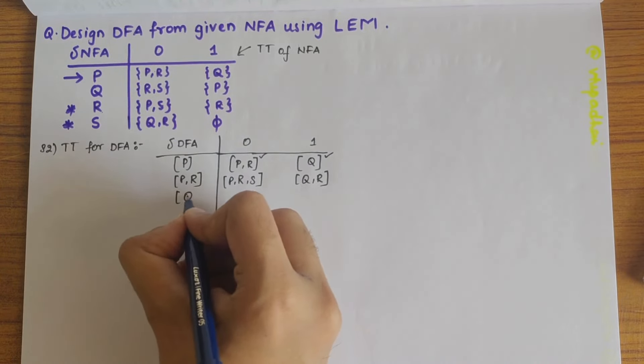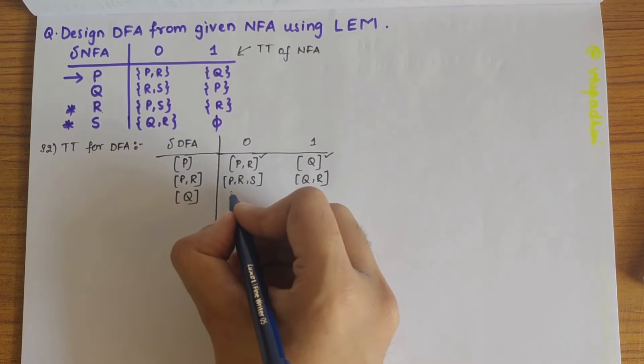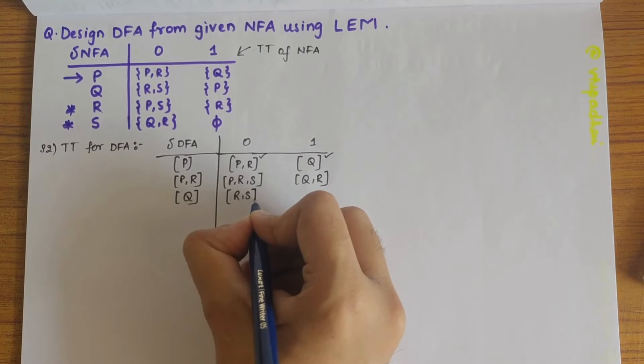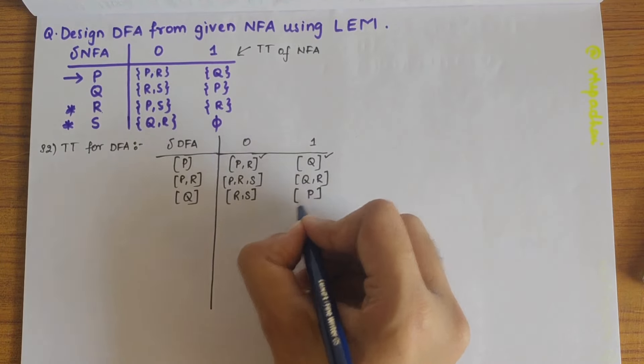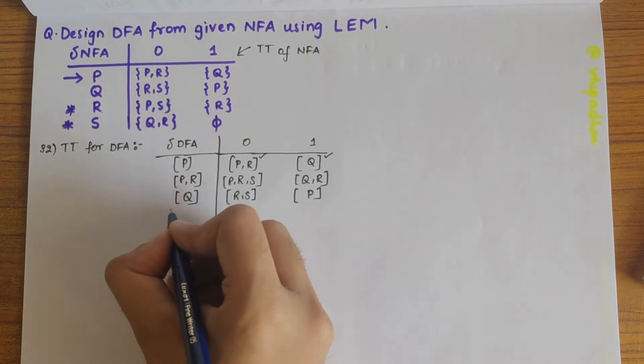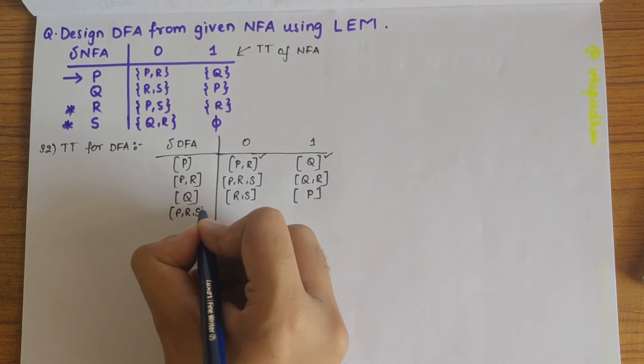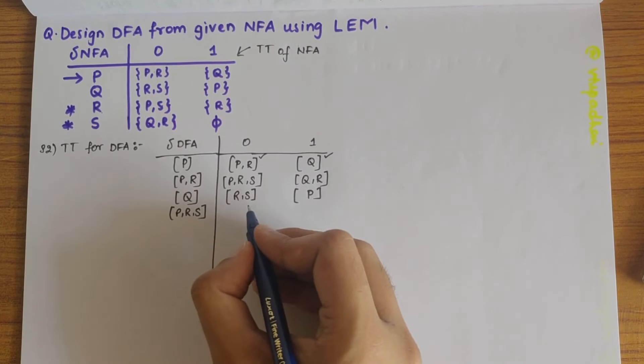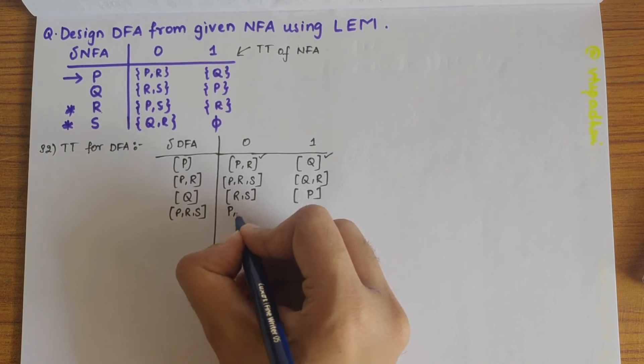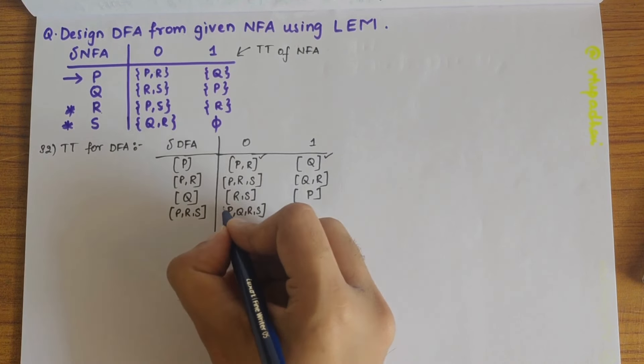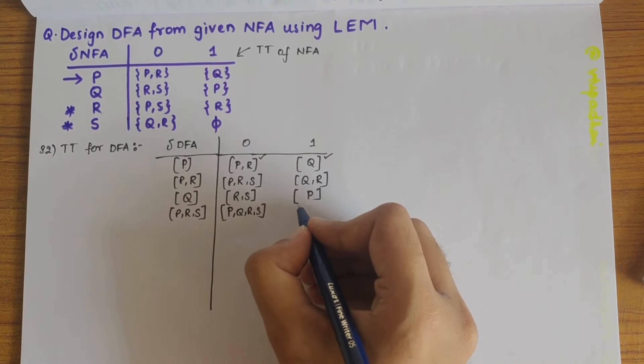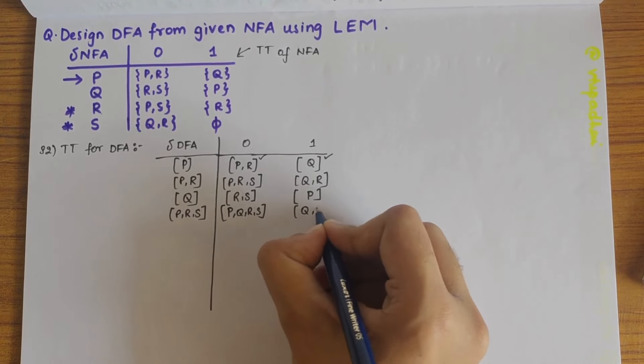Now we have Q. So Q on 0 is RS and Q on 1 is P. So Q is also defined. Now let's take PRS. PRS on 0 is P, Q, R and S. And PRS on 1 gives Q and R.